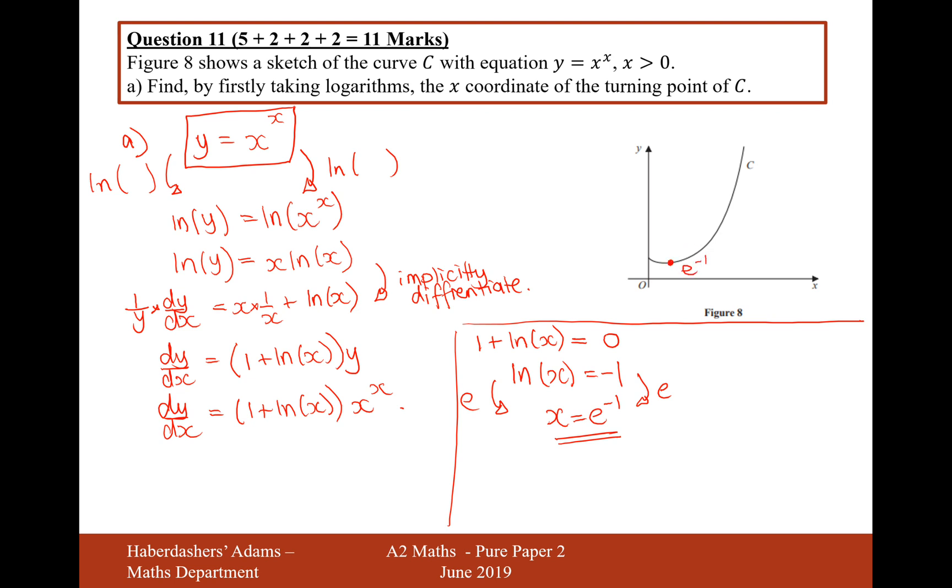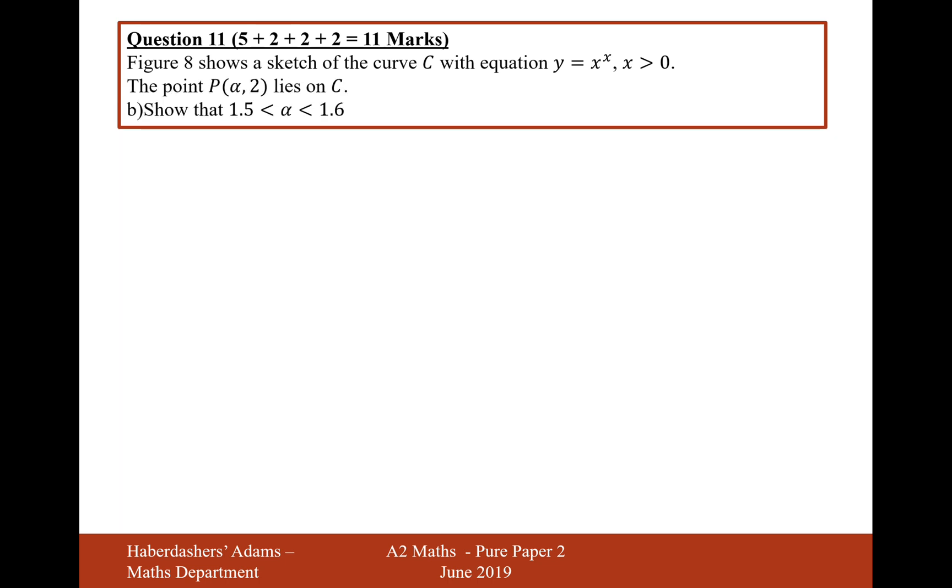And why did I just set the bracket equal to 0? Because there's no value for x that will set this equal to 0. Because if you do 0 to the power of 0, that's a very difficult indice to work out. It has lots of different results depending upon how you work it out. But this inside the bracket here should have a value that equals 0. And it is e to the minus 1. So that's the answer to part A. Let's now move on to part B.